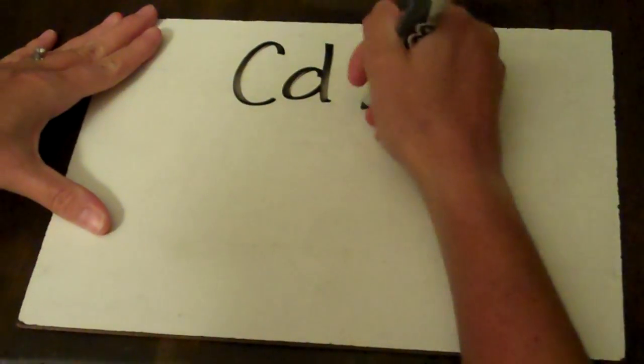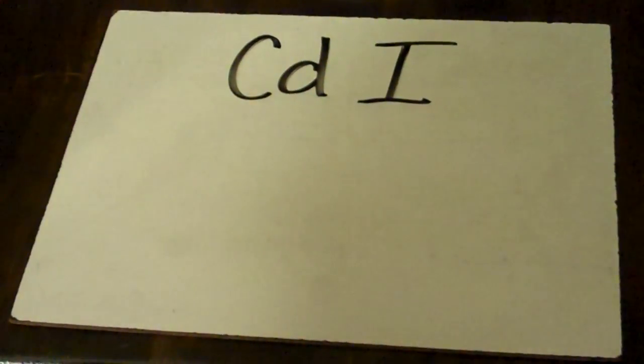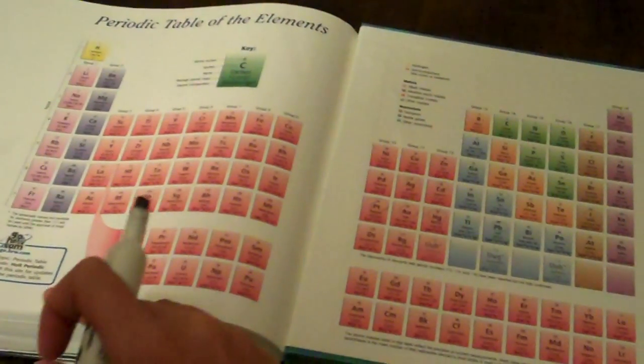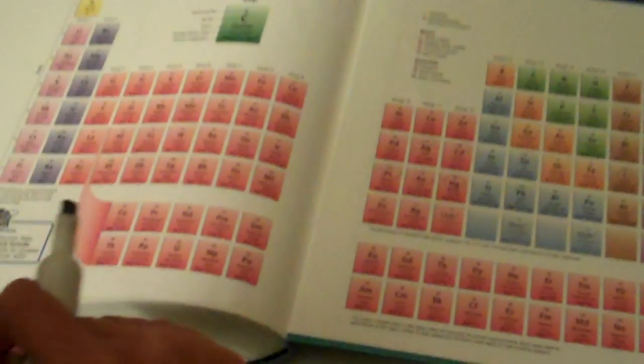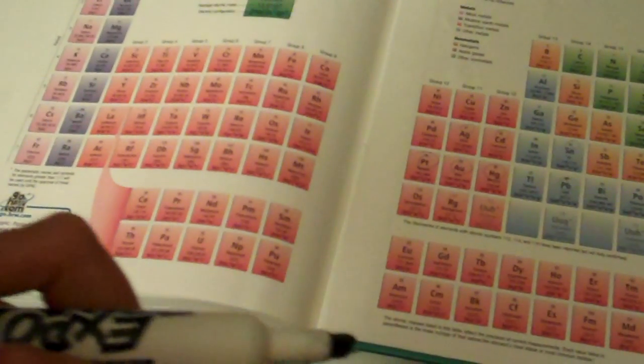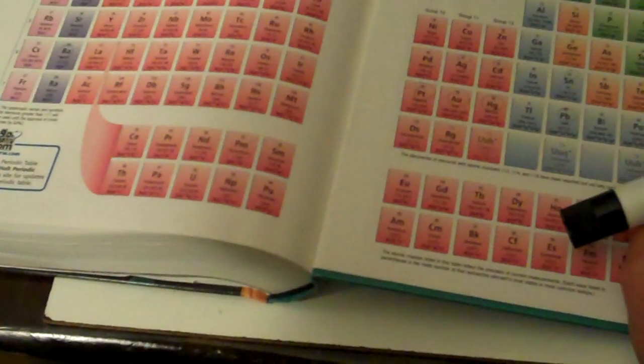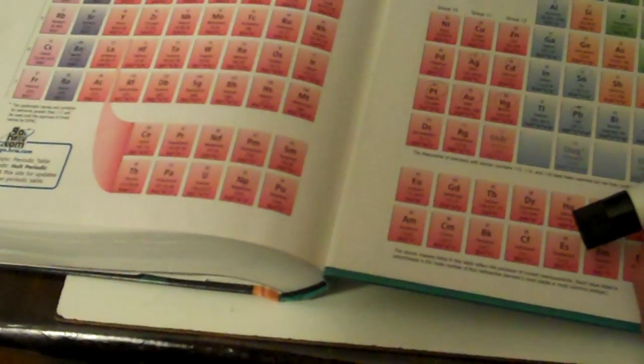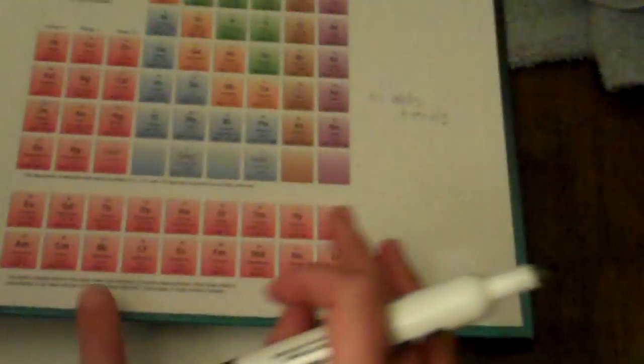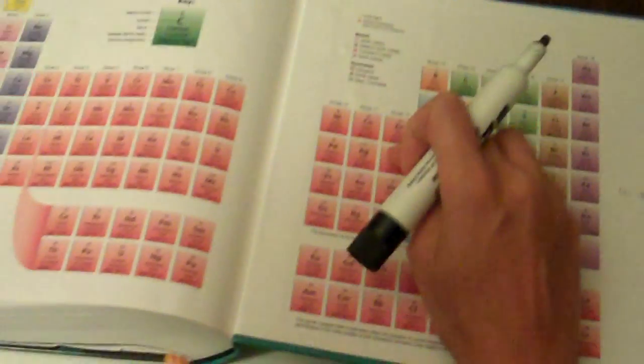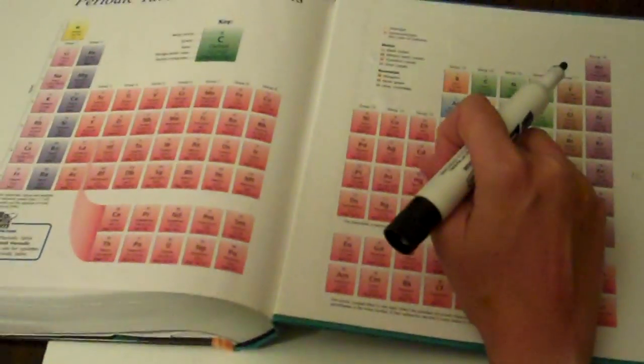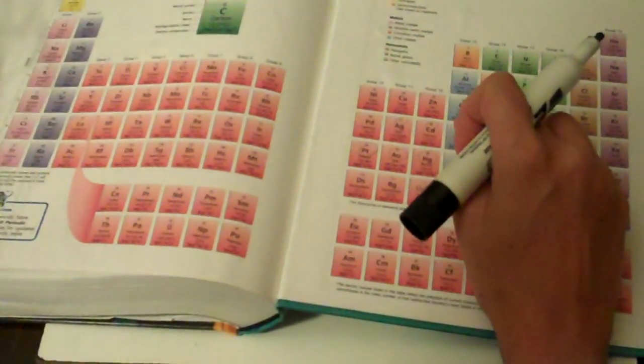Let's take cadmium and iodine. Once again, we need to look to our periodic table. I'll give you a hint. The first one is usually the cation and it's going to be over here. And I can't find it. And the iodine is right here. It's a transition metal.